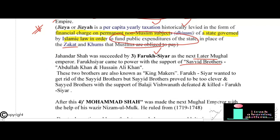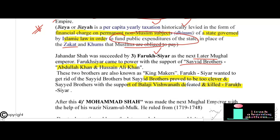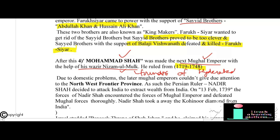Farrukhsiyar wanted to get rid of the Sayyid Brothers, but they proved too clever and, with the support of Balaji Vishwanath — the Maratha Peshwa — defeated and killed Farrukhsiyar. After this, Muhammad Shah, famously known as Muhammad Shah Rangila, became the next Mughal emperor. With the help of his wazir Nizam-ul-Mulk (the founder of Hyderabad state), Muhammad Shah ruled from 1719 to 1748. Due to domestic problems, the later Mughal emperors couldn't give due attention to the northwest frontier.